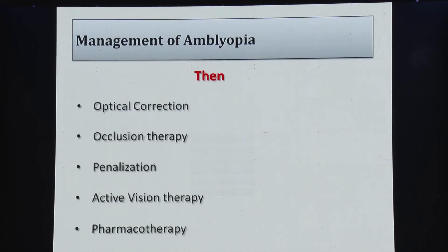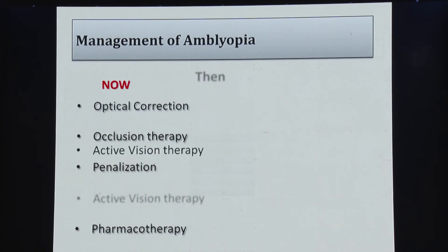In management of amblyopia, the basic methodology and means still remain the same: optical correction, occlusion therapy — which is still the mainstay of management — penalization, active vision therapy, and pharmacotherapy. But people are now giving more and more importance to active vision therapy, which we will cover later in this presentation.